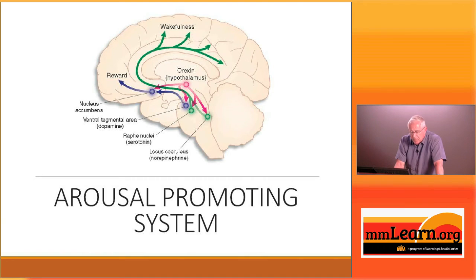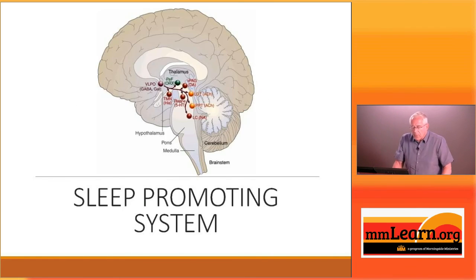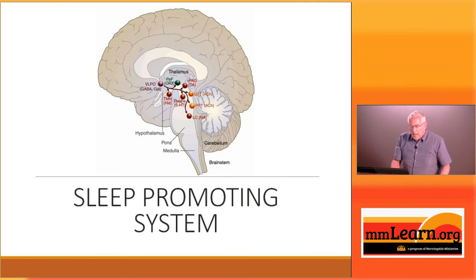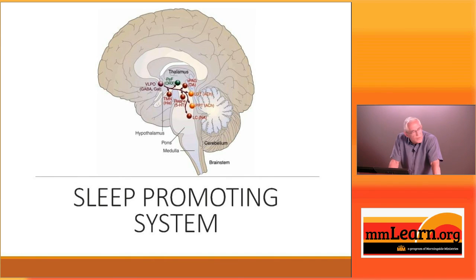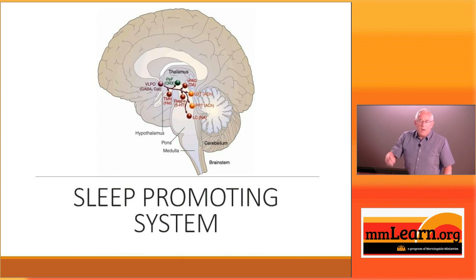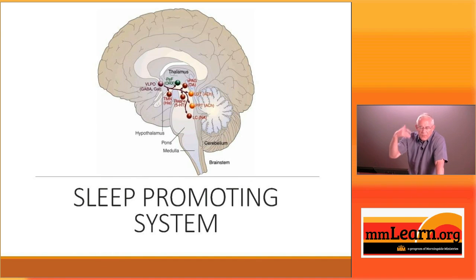With light, this wake-promoting system is activated, and with darkness it starts to diminish. As if in our brain we have two clocks. The sleep-promoting system is also very well mapped out — the center of activity is called the VLPO, the ventrolateral preoptic area. The key neurotransmitters here are GABA and galanin, while serotonin, norepinephrine, and dopamine play only minor parts. Believe it or not, histamine also plays a big part. And as darkness falls, we see more melatonin secreted, which plays a part in sleep induction and maintenance.